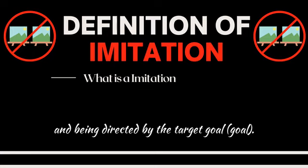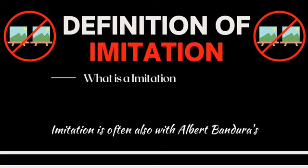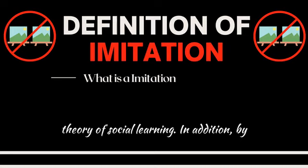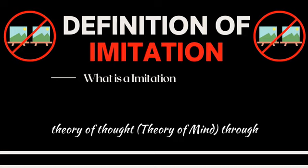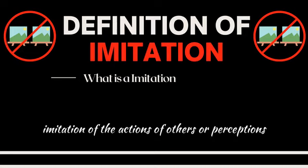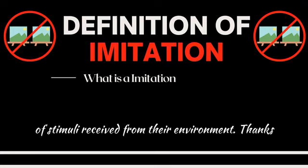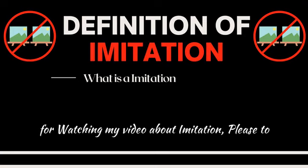In the process of imitation, humans carry out the principle of imitating an action by understanding the purpose of the action and being directed by a target goal. Goal imitation is also associated with Albert Bandura's theory of social learning. Additionally, through imitation, children are said to form their theory of mind through imitating the actions of others and the perceptions of stimuli received from their environment.